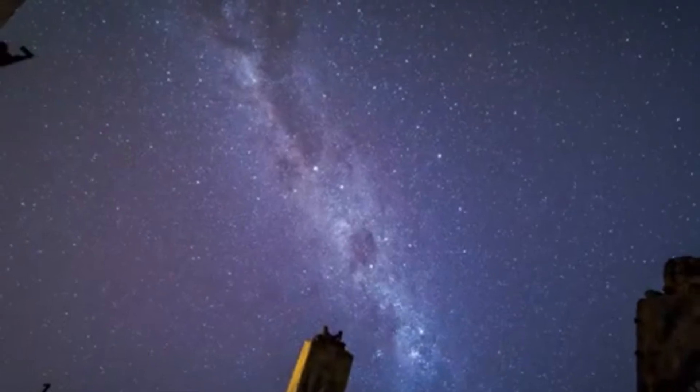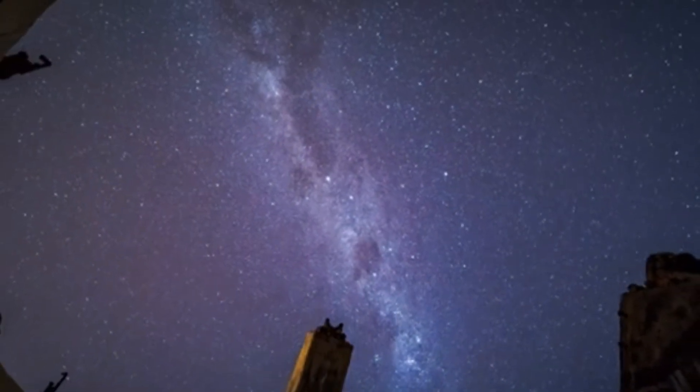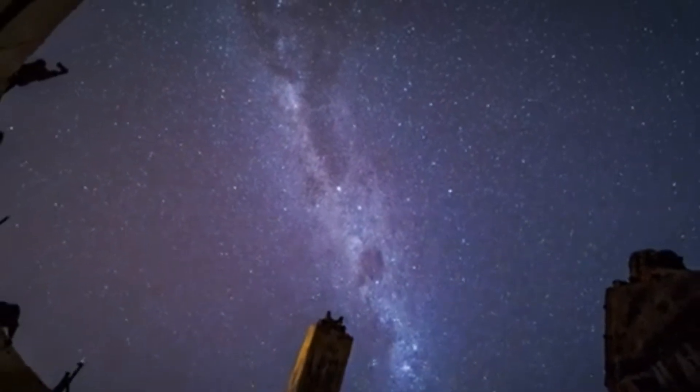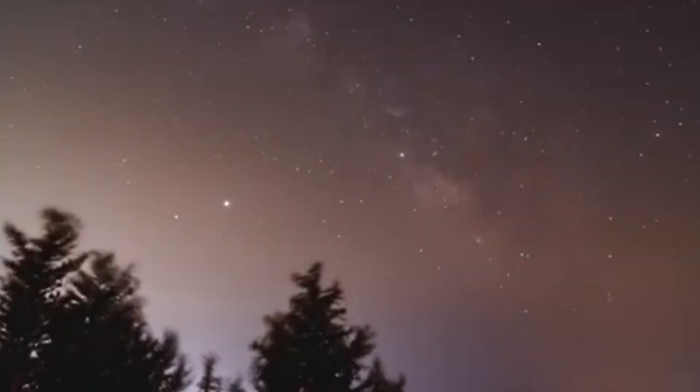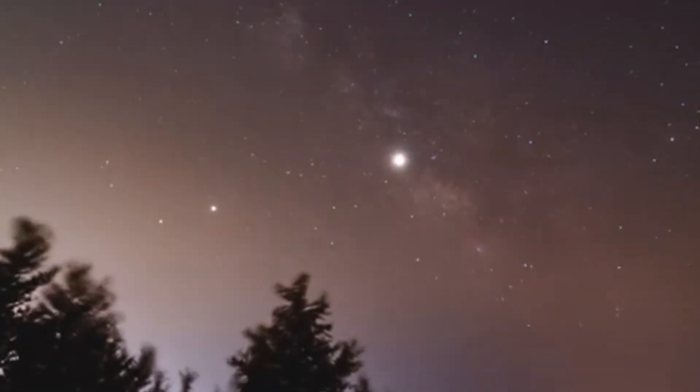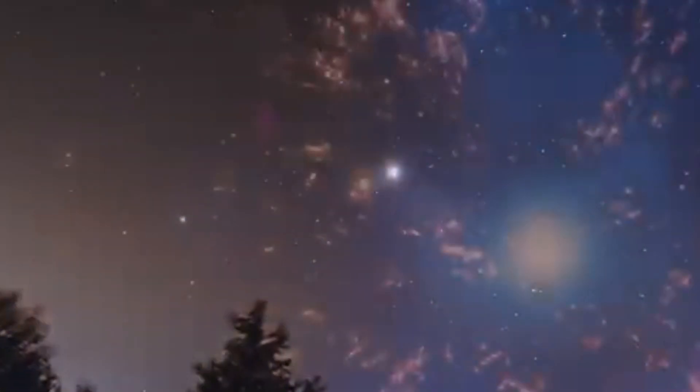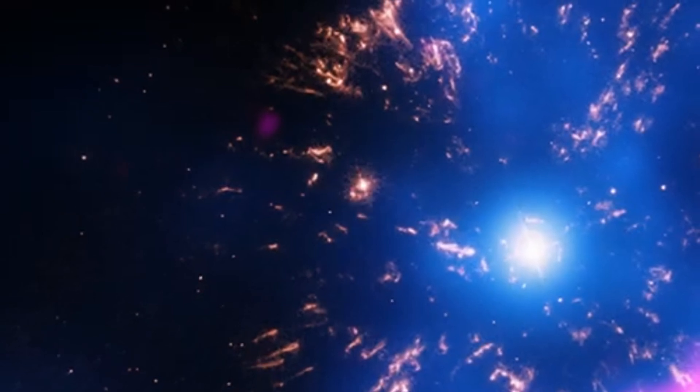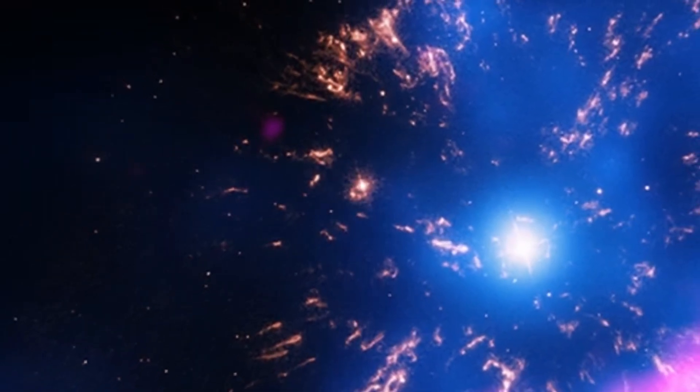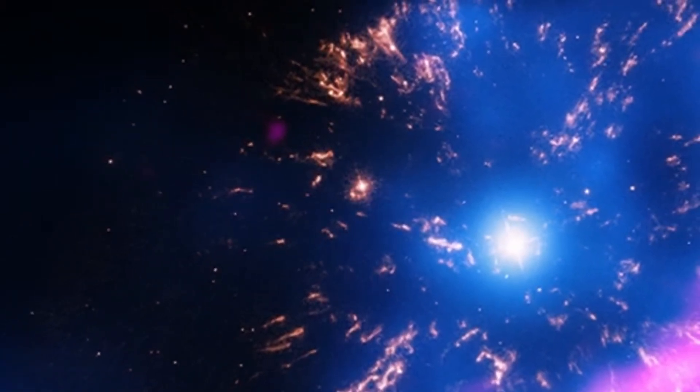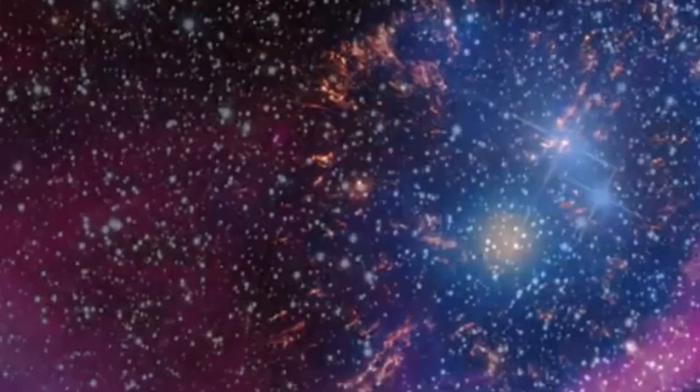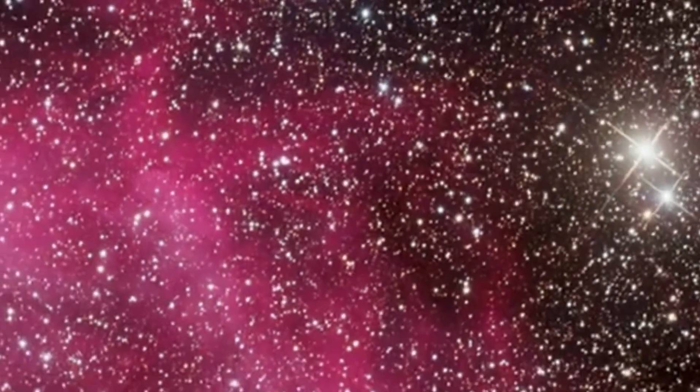This explosive release makes the Blaze Star suddenly appear around 1500 times brighter, transforming into a nova that is visible from Earth. Located about 3000 light years away, this explosive event, however, is quite different from the supernovae many are more familiar with. In a supernova, a massive star ends its life in a final cataclysmic explosion that leaves nothing of the star's core. For a star to end this way, it must be at least eight times the mass of our sun.